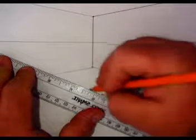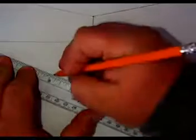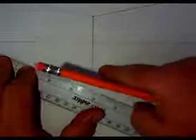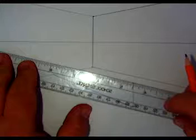Now, for this bottom line, I want you to go as far as the lower orthogonal or lower converging line. Slide your ruler up. Repeat the process.